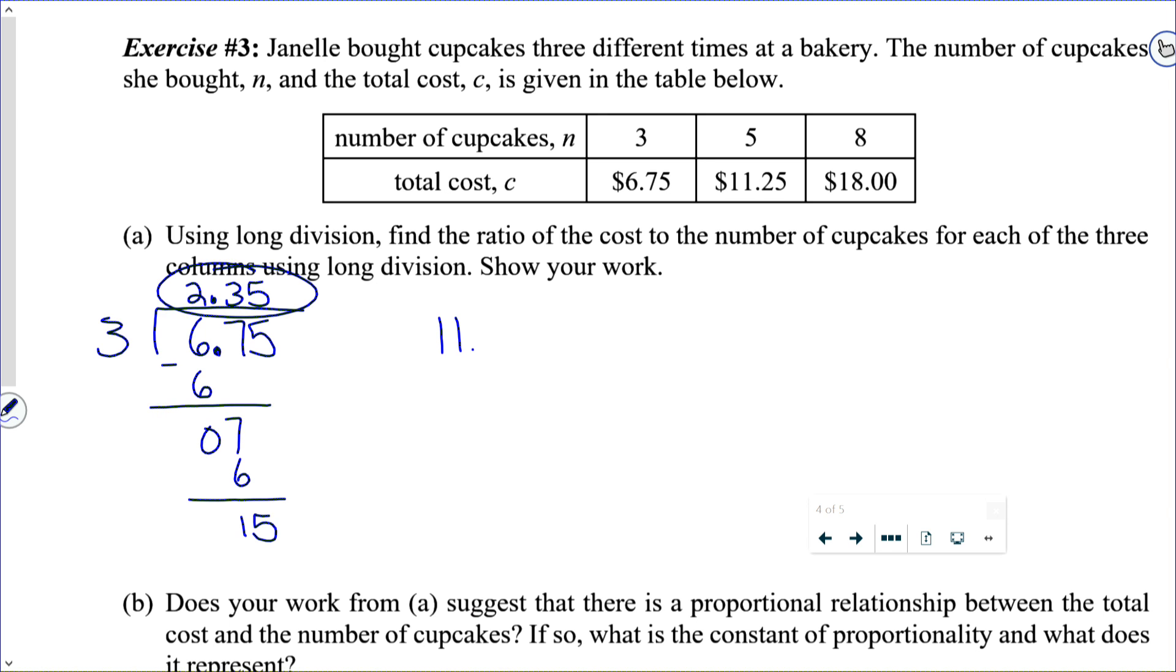The next case, I'm going to do 11.25 divided by five. Five goes into 11, two times, 10, subtract, one, two. Five goes into 12, two times. That gives me 10, subtract, 25, and five. That makes me wonder about that. Ah, that's why. That should be a two there.